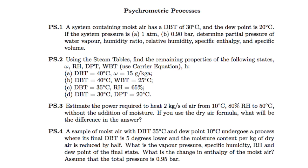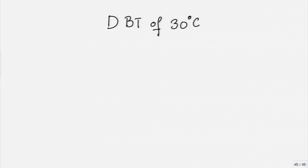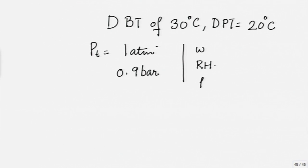I have put on this sheet on psychrometric processes and problem 1. A system containing moist air at a DBT of 30 degrees and the dew point is 20 degrees. Two questions have been asked: what happens if p total, that is the system pressure, is one atmosphere and if it is 0.9 bar. Based on these two pressures what we need to find out is omega, RH, H and V. These are the quantities that need to be found out.